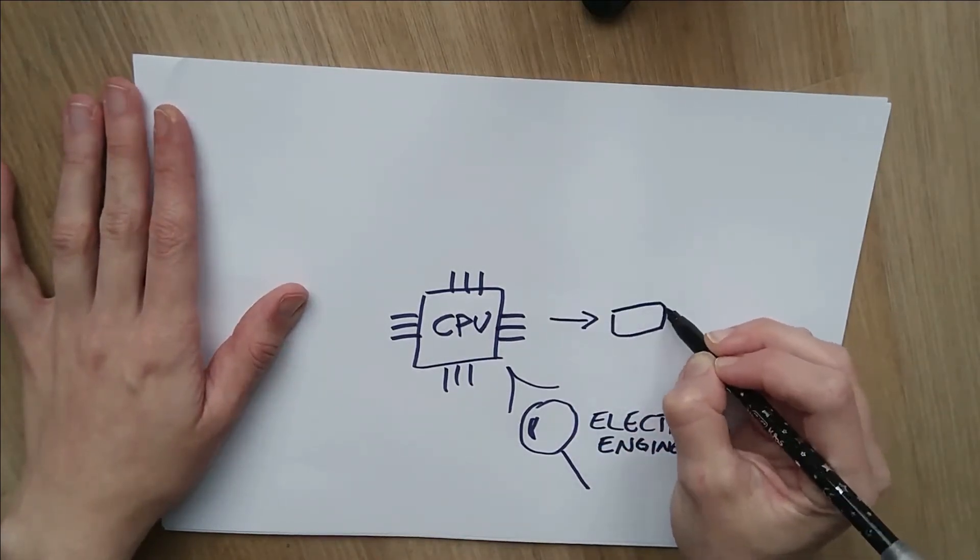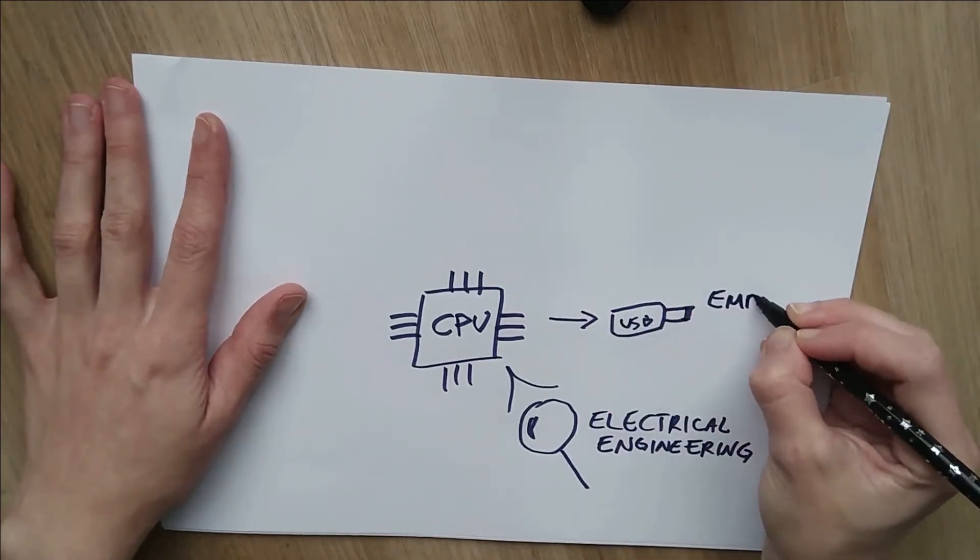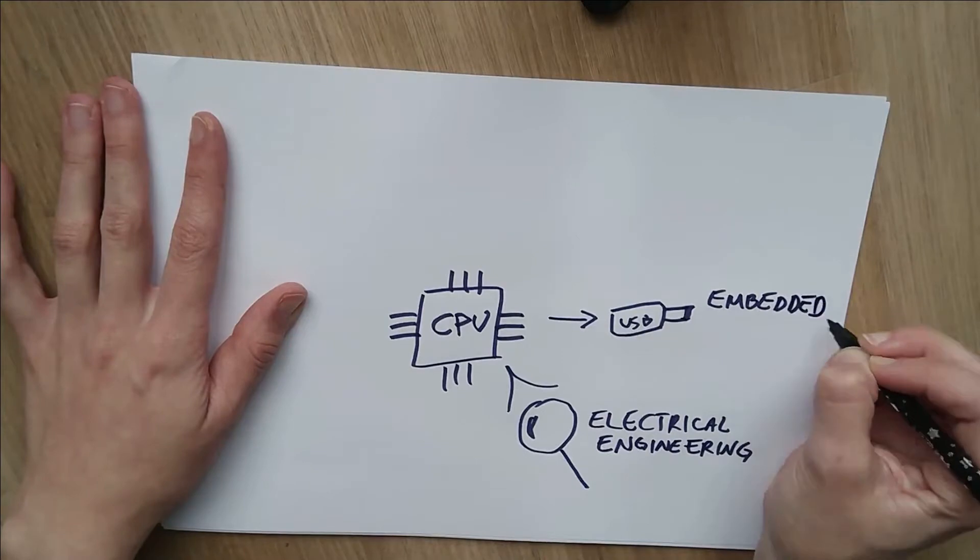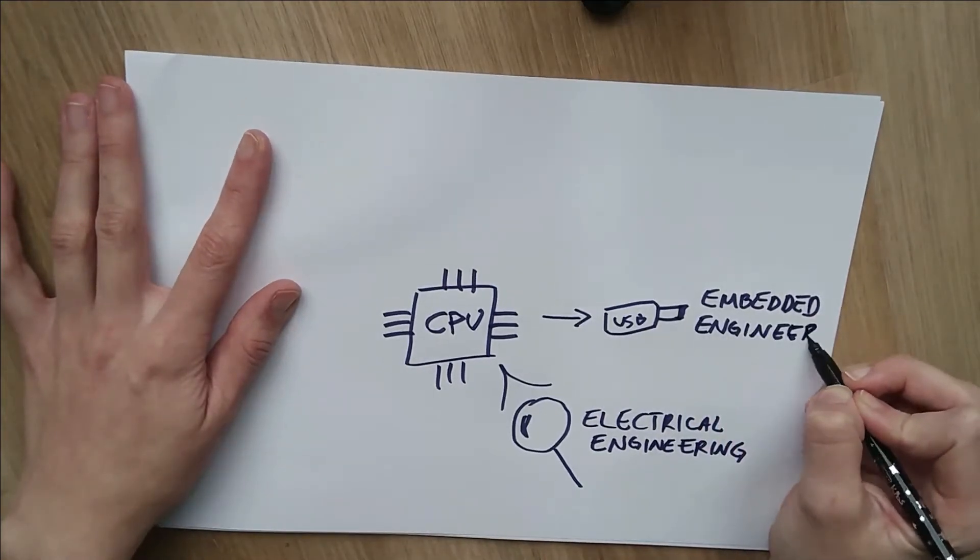The first thing that we might want to build is a system that is called an embedded system. It's fairly simple although quite complicated to build and it can be anything from a LED in a USB to something like an onboard computer in a car.